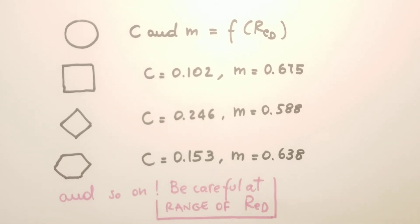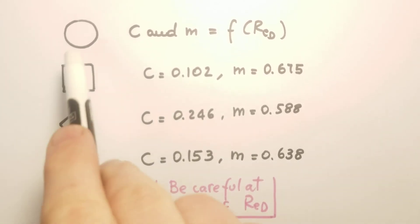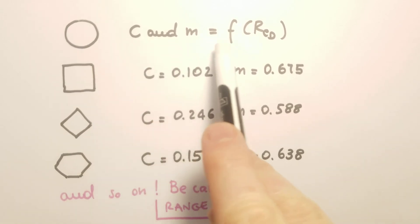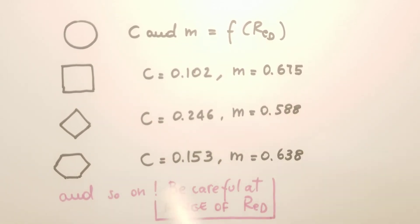So this is a typical table you can find in textbooks. So for a cylinder, C and M in general depend on the Reynolds number. So for each Reynolds number, you will have different values for C and M. For a square, these are the values.